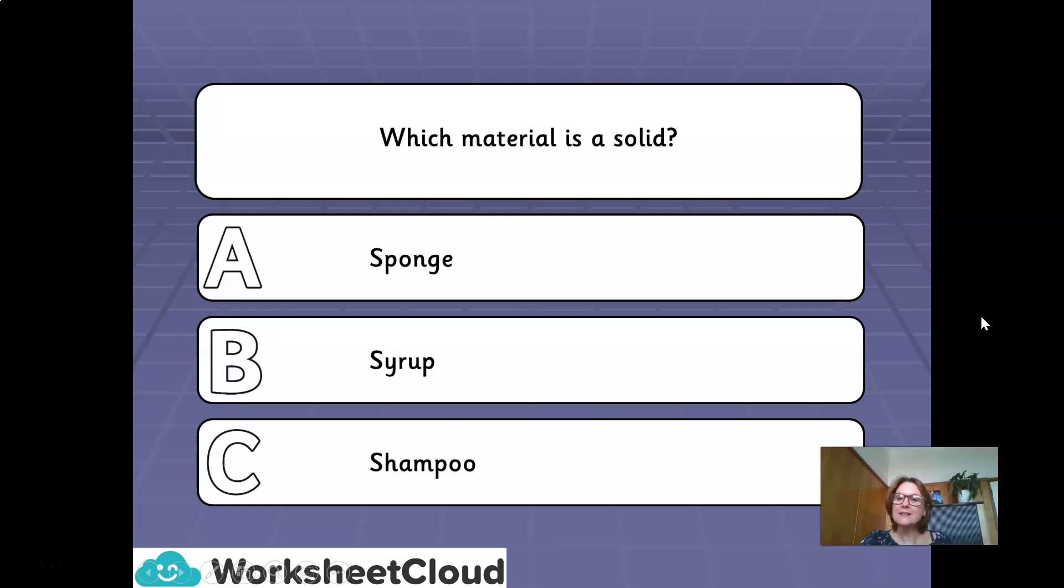Which material is a solid? A. A sponge. B. Syrup. C. Shampoo. A. A sponge. Well done.